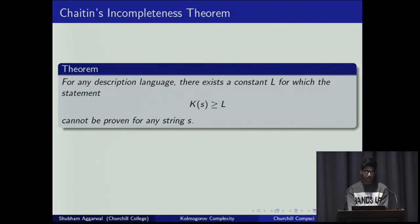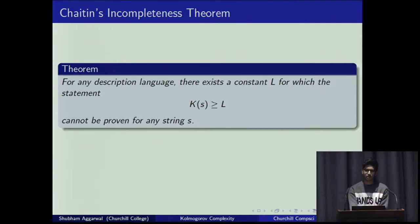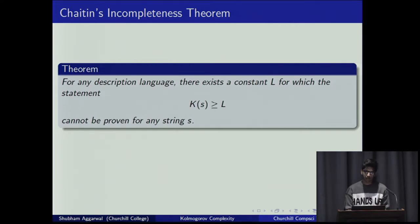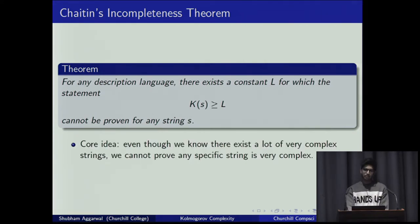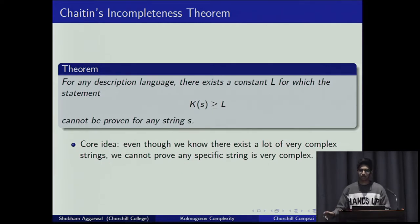Moving into the theorem itself — it's counterintuitive. Even though we know strings can have arbitrarily large complexity, there exists a constant L depending on the language we choose, such that for that constant, you can't actually show that any string has higher complexity than L. For example, if L is 10,000, then for any string you can't prove its complexity is more than 10,000, even if that string is millions of characters long. We know many complex strings exist, but we can't show any specific string has very high complexity.